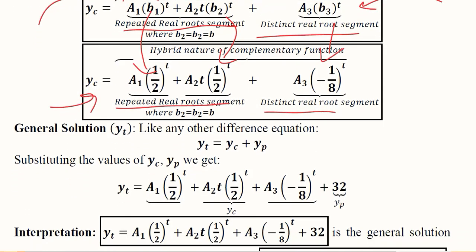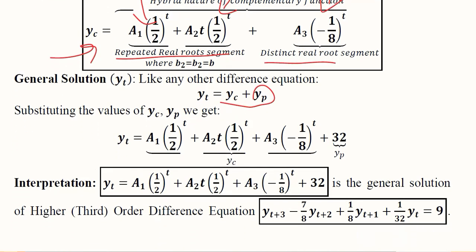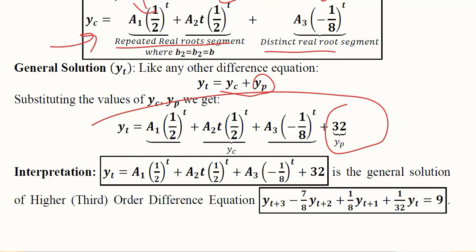After substituting both the repeated and distinct root values, we get the complementary function. Adding the particular integral of 32 to it gives the general solution. This is the time path of the given third-order difference equation.